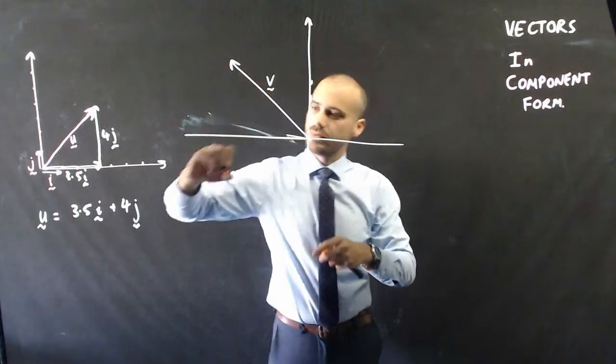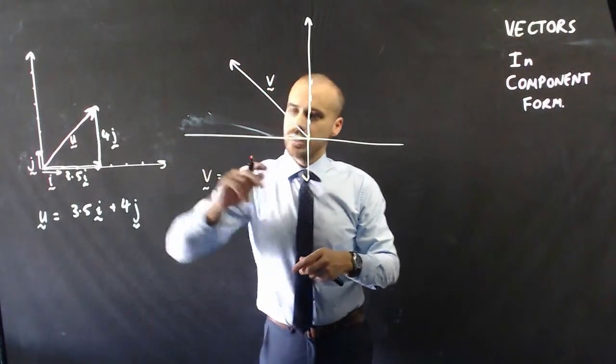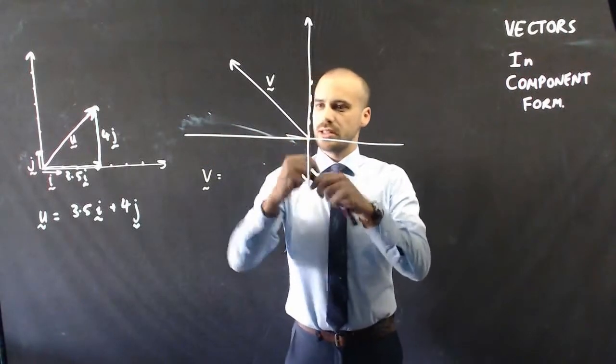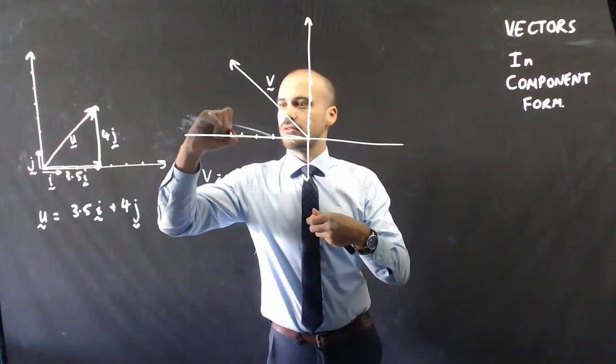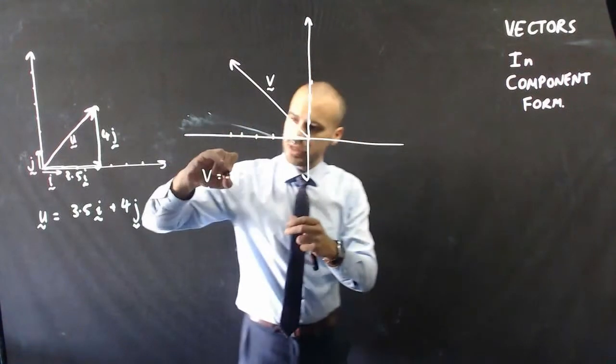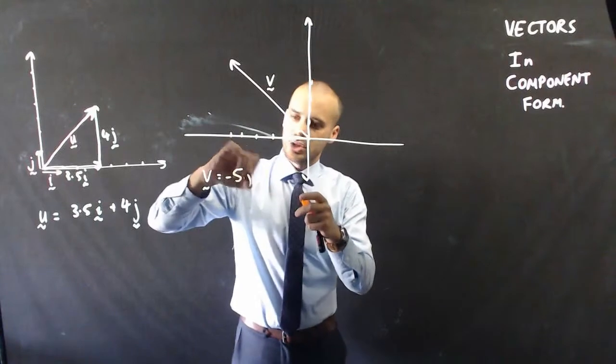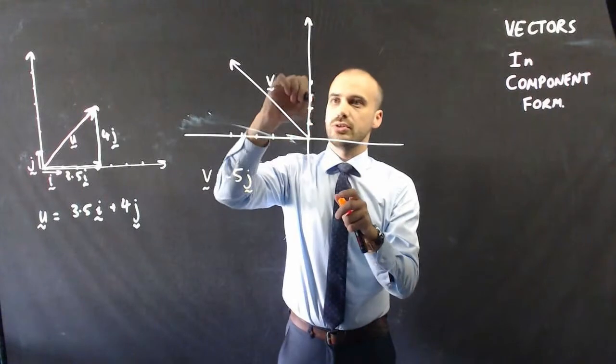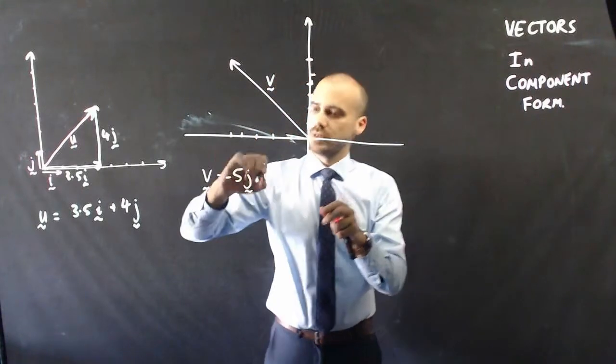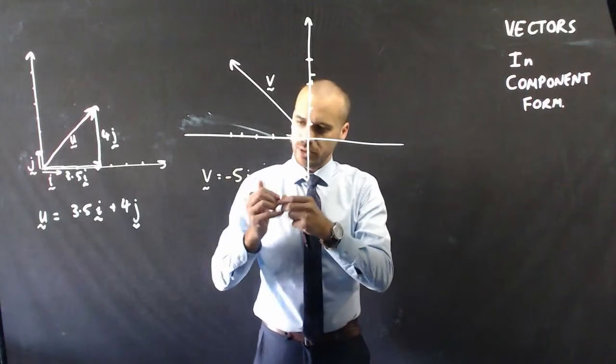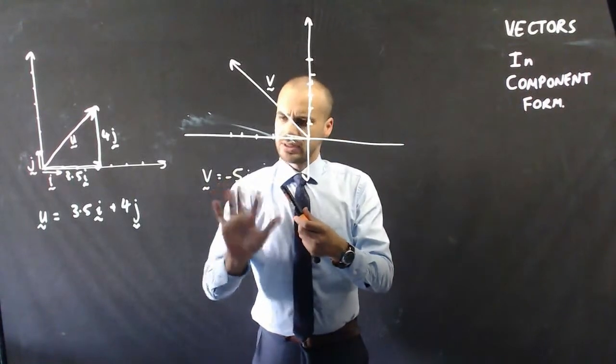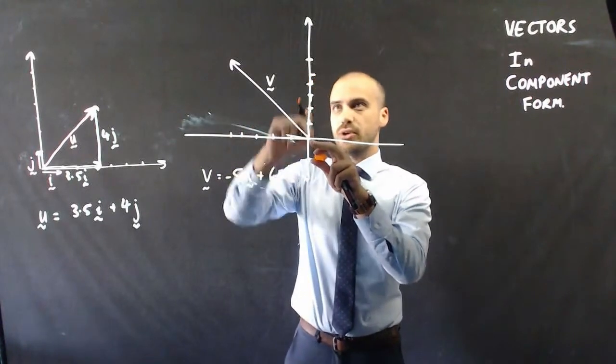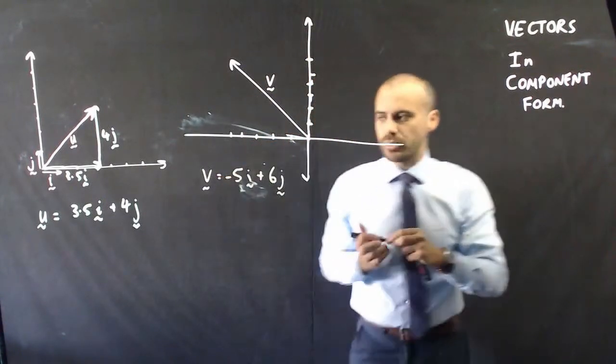So here's my Cartesian plane. Now, this time, let's call this vector v. It's pretty clear that v is moving this direction here. So I can say that that's 1, 2, 3, 4, 5. It looks like it's moving negative 5 in the j component, negative 5 across, and, 1, 2, 3, 4, 5, 6, plus 6. Oh, that's the i component, sorry. That's going to be confusing. Negative 5 in the i component, and positive 6 in the j component.